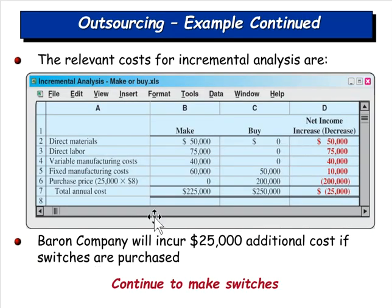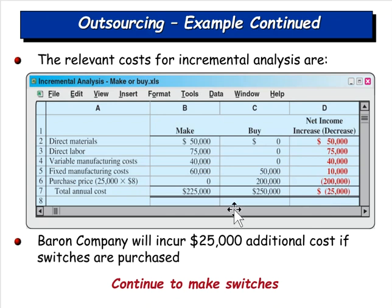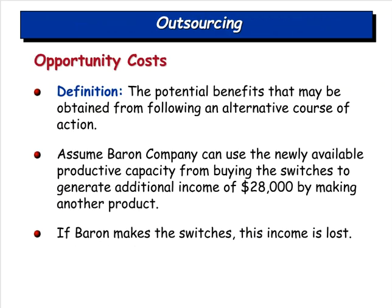With incremental analysis: if we make, the cost is $225,000. If we buy, the purchase price plus $50,000 in remaining fixed costs totals $250,000 — so we'd lose $25,000. We're better off continuing to manufacture. Another advantage of making in-house: we have much more control over quality. When you outsource, you lose that control.